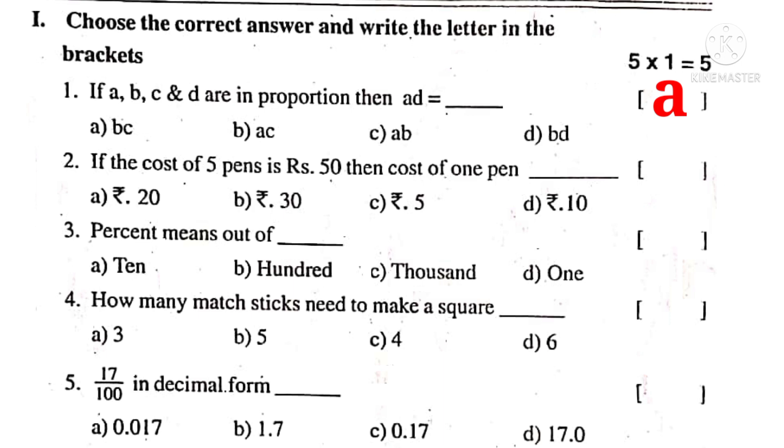No. 2. If the cost of 5 pens is Rs. 50, then cost of 1 pen is 50 by 5. On simplification by 5, 5 into 10 times. So Rs. 10. So the correct choice is D.